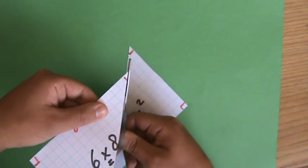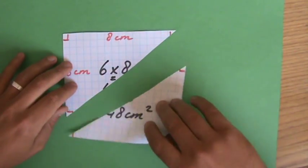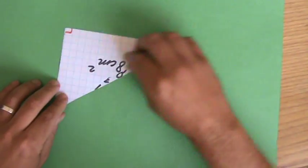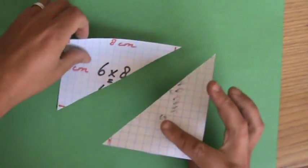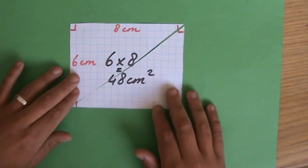And this goes like that. That's not a very straight line, but that should be the diagonal. And I now have two—sorry, you should turn that—two identical triangles.